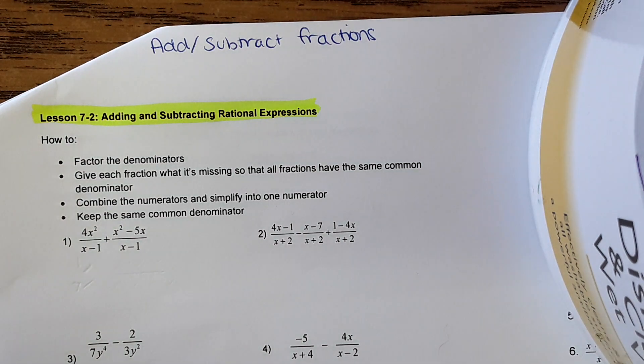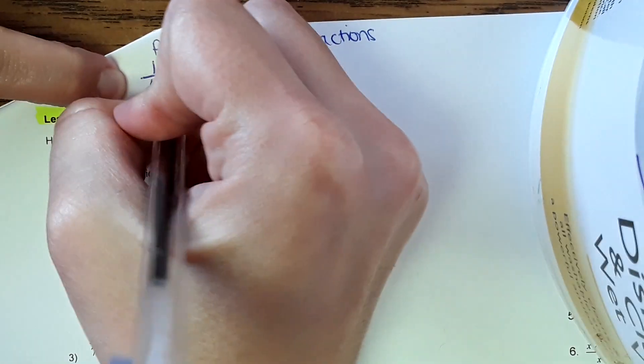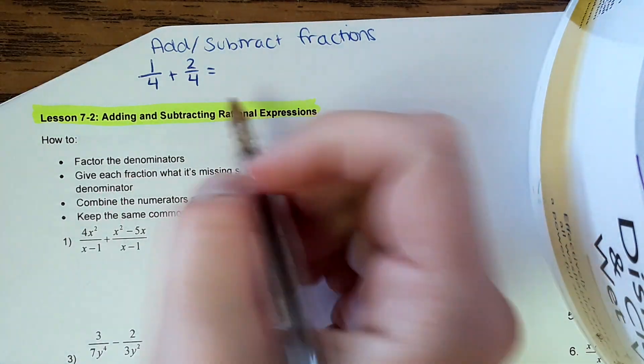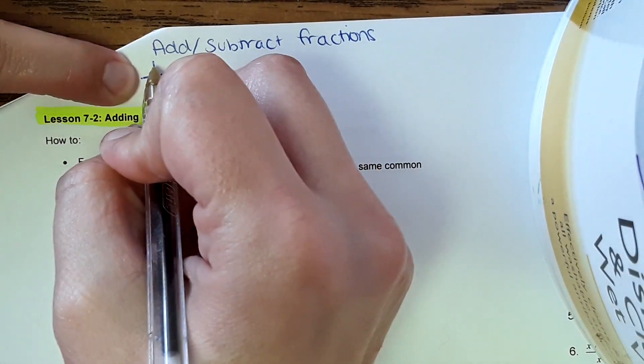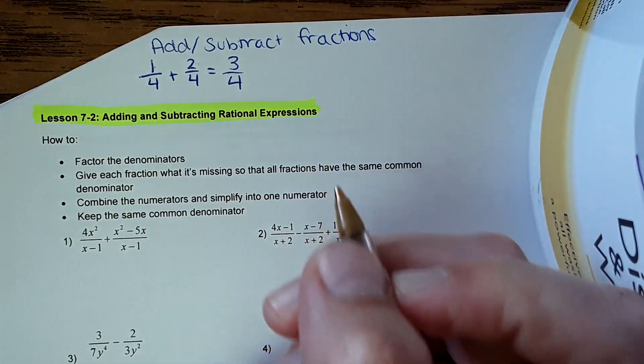Okay, when you learned to add or subtract fractions, you were given numbers like this: 1/4 plus 2/4 equals. When you add fractions, you look for having the same denominator, and if you have the same denominator, you can just add the numerator. So 1 plus 2 would be 3, so the answer to this would be 3/4.